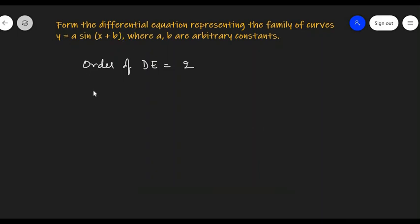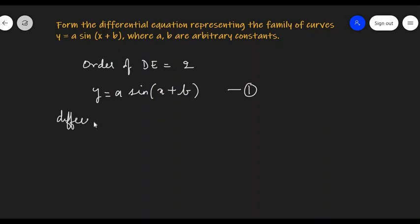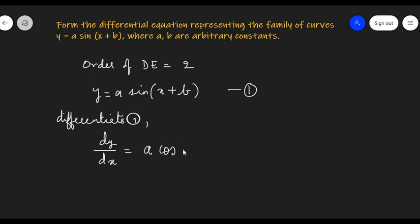So y = a·sin(x + b) is the given equation. Let us differentiate it. We are going to get the differentiation of y as dy/dx. A is a constant, and differentiation of sin is cos, so we get a·cos(x + b).